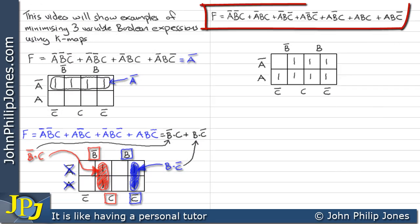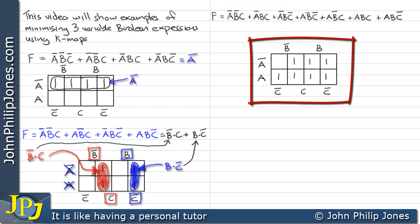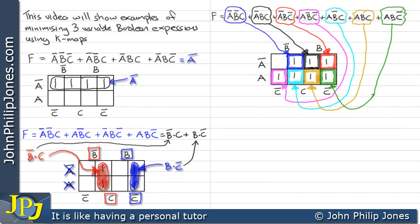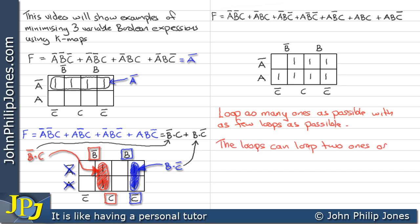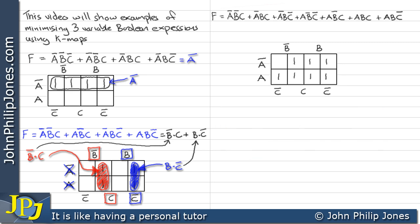Now you can see that this sum of minterms has been plotted onto this three-variable Karnaugh map. I have shown all of the plots against their appropriate minterms by colours as you can see. You can pause the video and check this yourself if you like. Now loop as many ones as possible with as few loops as possible — loops can be loops of two ones or four ones. I can see four I can loop here, another four here, another four here, and another four here.